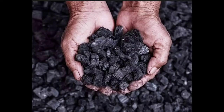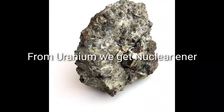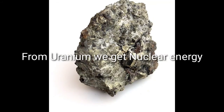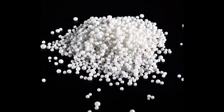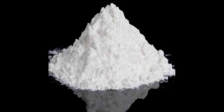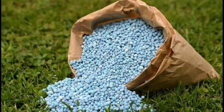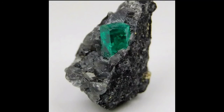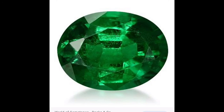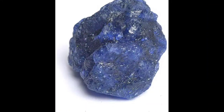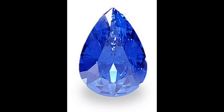The mineral uranium is used to get energy called nuclear energy. Some minerals like nitrates, sulfates, and phosphates are used to make fertilizers. And don't forget — rocks like diamonds, emerald, ruby, and sapphire are beautiful. These rocks are polished and can be used in jewelry and can make you rich and wealthy.